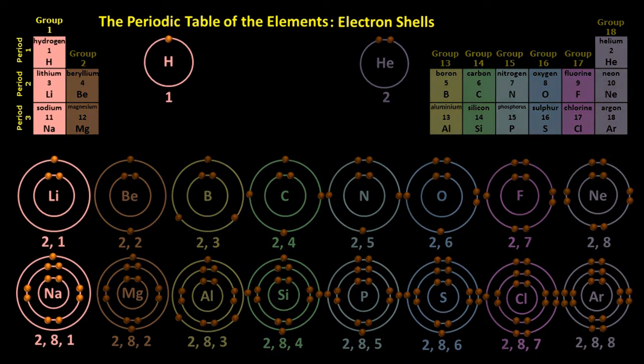Notice how the atoms in group one - hydrogen, lithium and sodium - all have one electron in their outer shell. This, in fact, applies to all the elements in group one. They all have one outer shell electron.